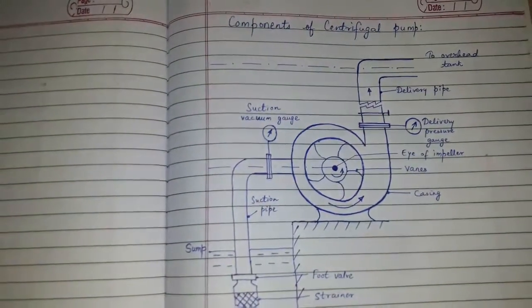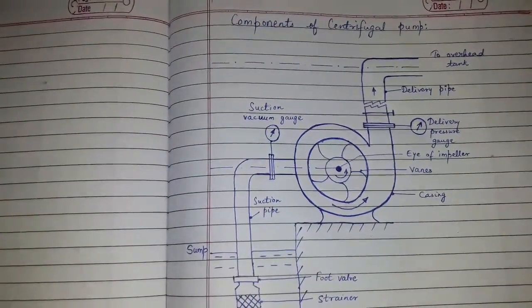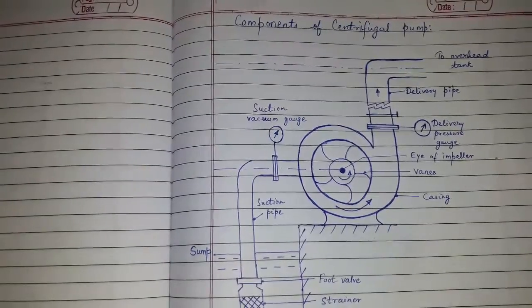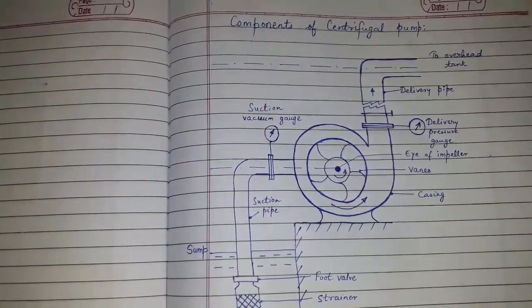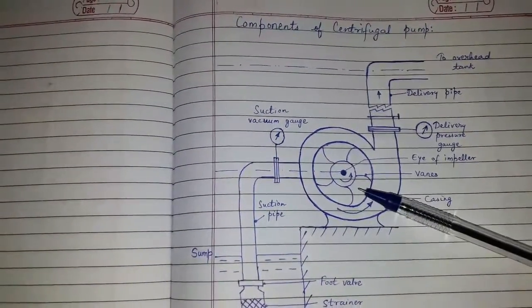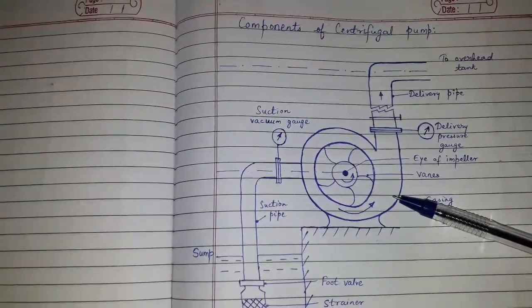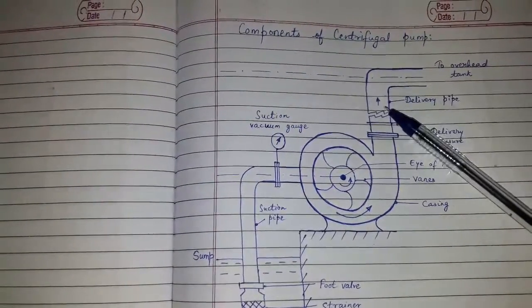Today's topic of discussion is components of centrifugal pump. A centrifugal pump has the following main components: impeller, casing, suction pipe, and delivery pipe.